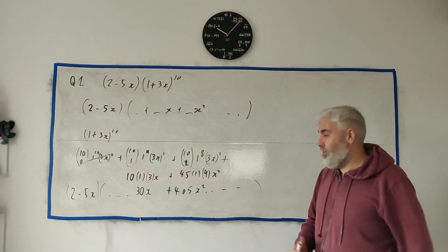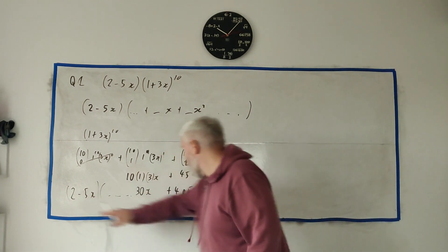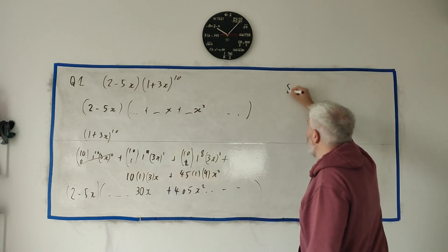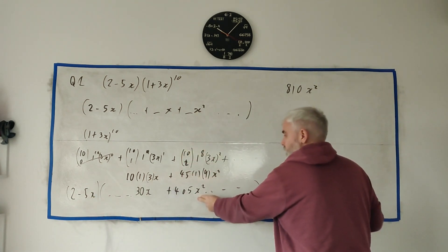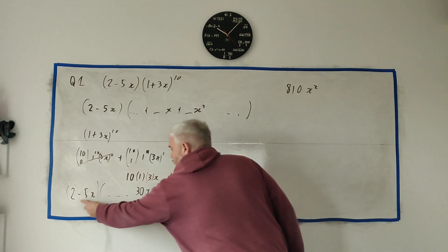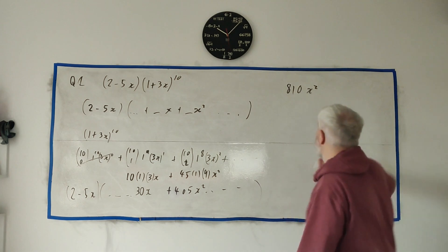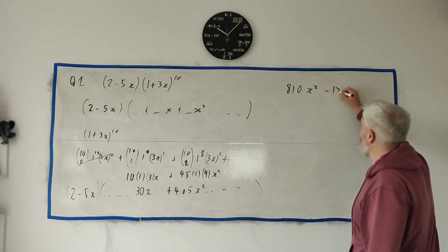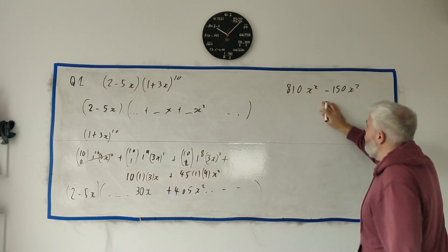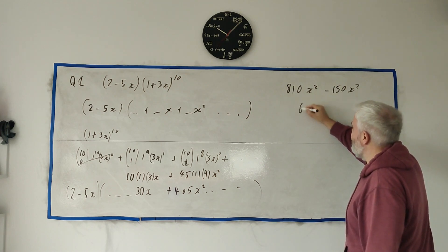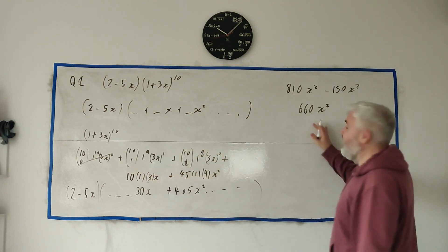So be smart what you multiply out. I do care about 2 times 405, which gives me 810 x squared, because 2 times this will have an x squared in the answer. I also care about the minus 5x times 30x, because the two x's will give an x squared. Minus 5 times 30 is minus 150 x squared. Take these away and what do we get? We get 660 x squared.